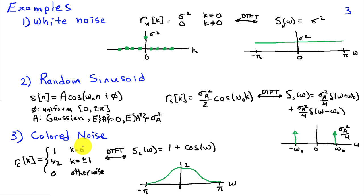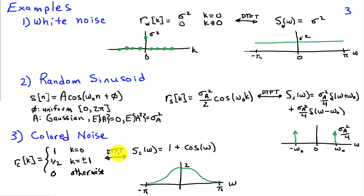As a third example, consider colored noise with a correlation sequence equal to 1 at the origin (k equals 0), one half for k equals plus or minus 1, and zero otherwise. Taking the DTFT gives a power spectrum of 1 plus cosine omega — a raised cosine, as sketched.